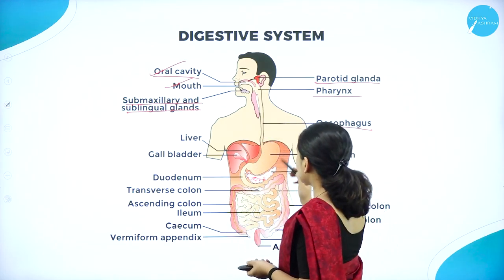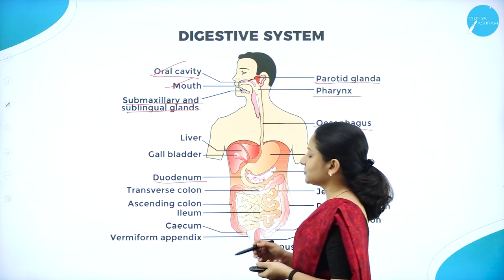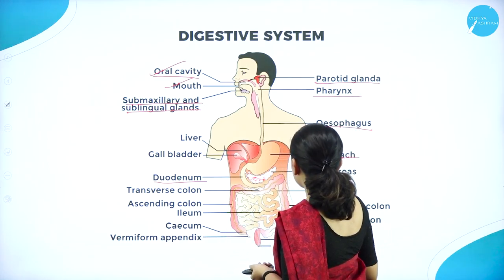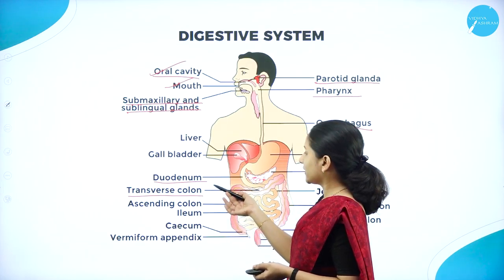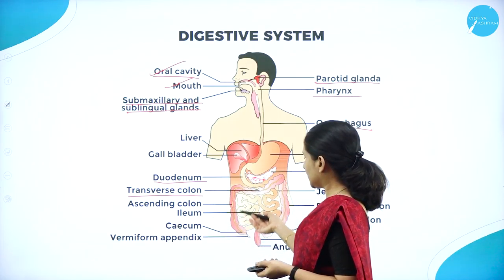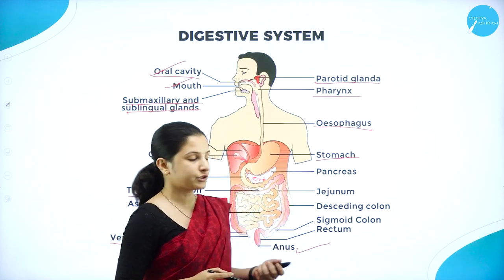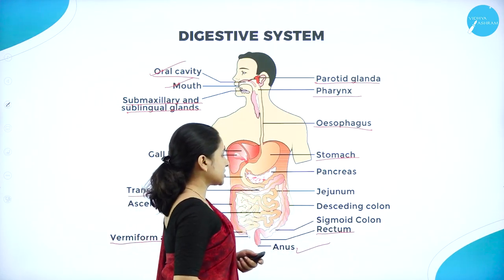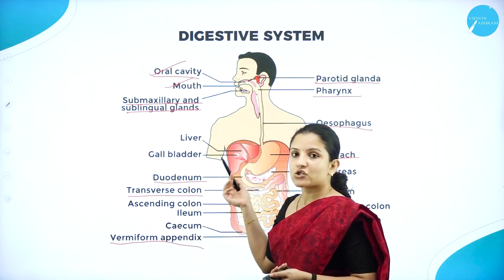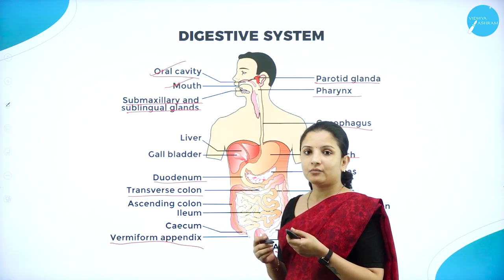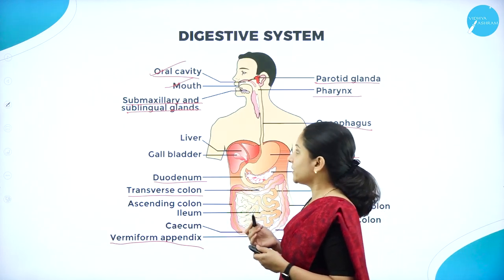The oral cavity leads to the pharynx, which is the throat. The pharynx continues to the esophagus, which is the food pipe. We are not talking about the trachea here because it is the windpipe; we concentrate only on the food pipe. The esophagus leads to the stomach, which leads to the duodenum — that is the small intestine — which leads to the large intestine. The large intestine has the vermiform appendix, then the rectum, and finally the anus, the last part of the alimentary canal.